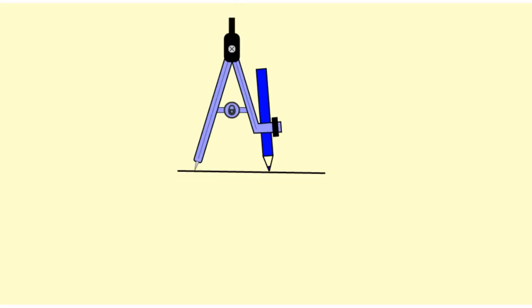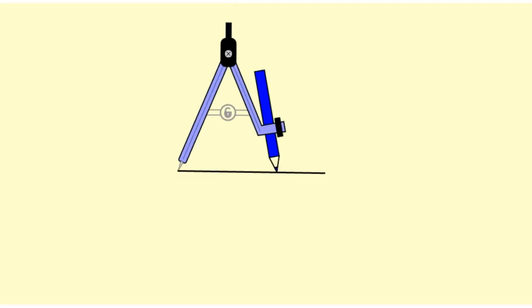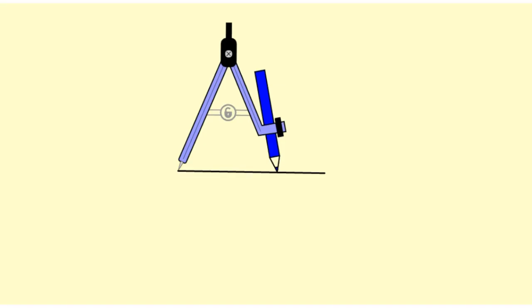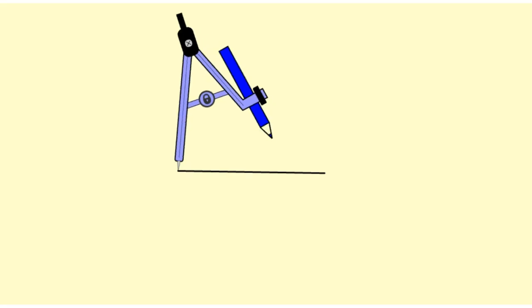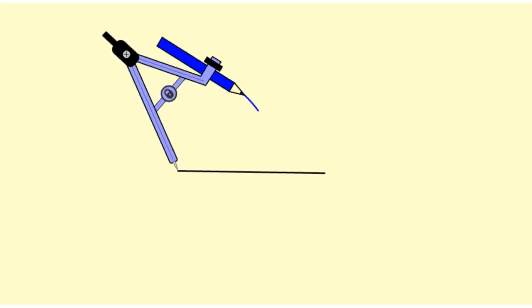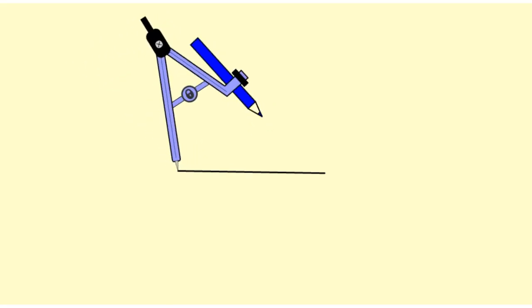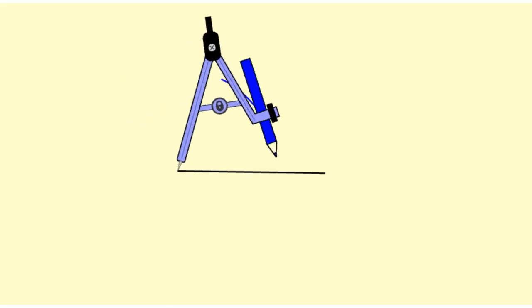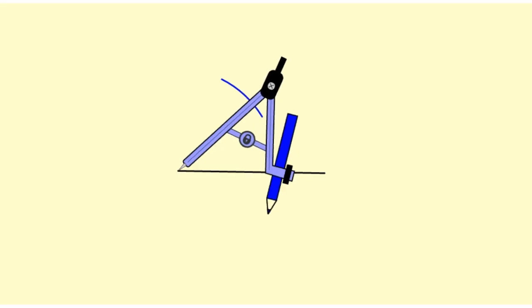I'm going to take my compass and put the point on the end of the segment. I'm going to open up the compass so it's clearly more than halfway, and I'm going to draw an arc above and an arc below. Here's my arc above, and I'm going to rotate it down.